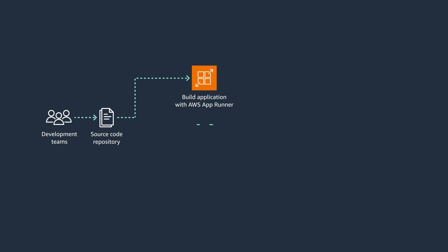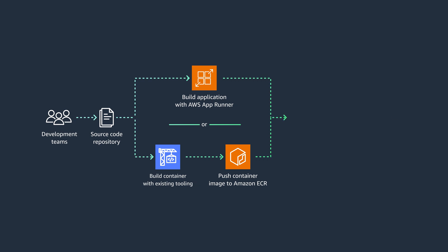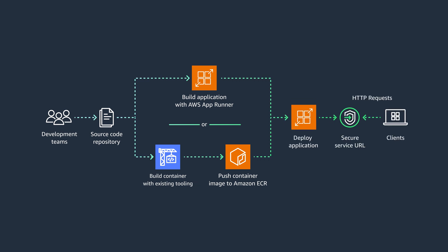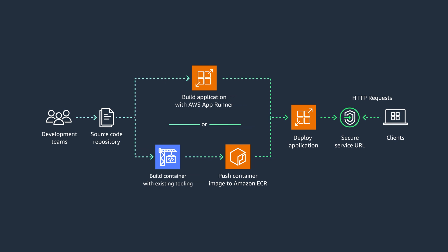In the second approach, you construct the application container images using pre-existing tooling and push it to the Amazon Elastic Container Registry for deployment. Once the application is deployed using either approach, the user is provided with a secure URL which is production-ready. AppRunner automates the process of building and deploying container images, configuring load balancing, implementing encryption, and dynamically adjusting resource allocation in response to incoming traffic requests.